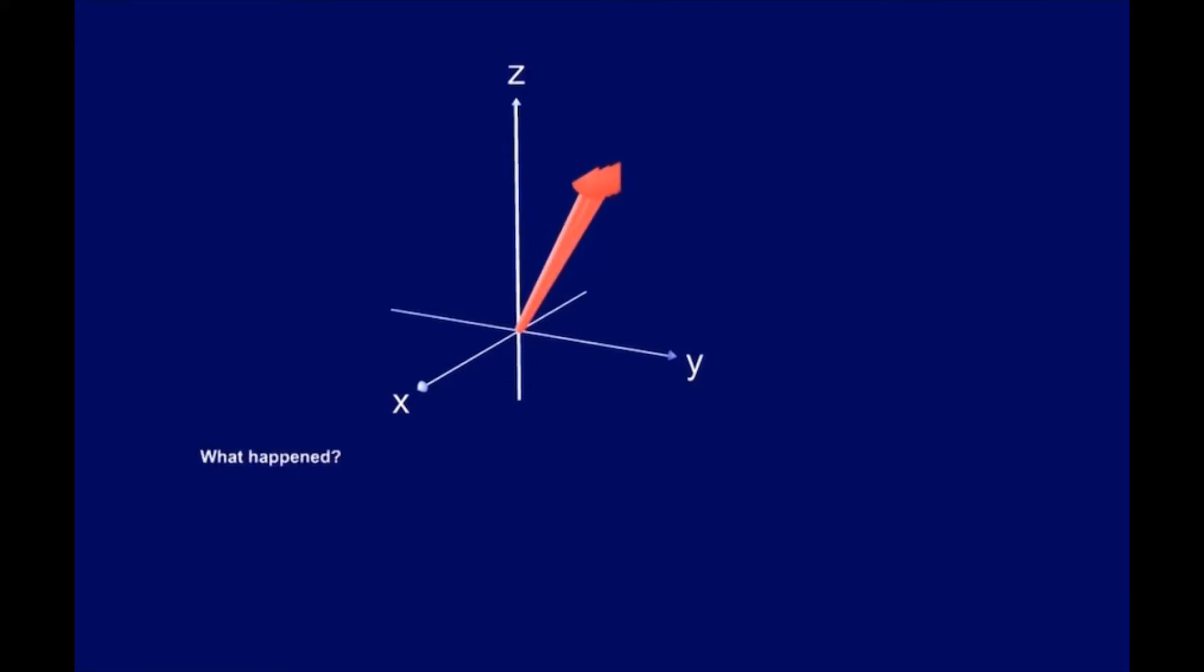What happened? Let us rewind and watch the scene again in super slow motion. This is the situation when the protons are in phase right after the 90-degree pulse. Shortly afterwards, they start to lose phase coherence. Then, we sent in the new 180-degree pulse.